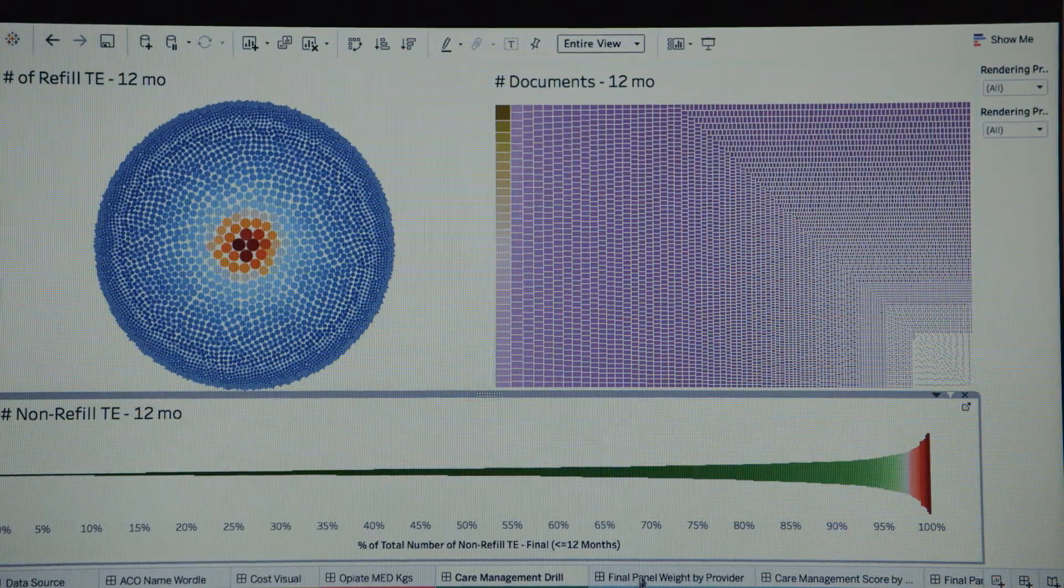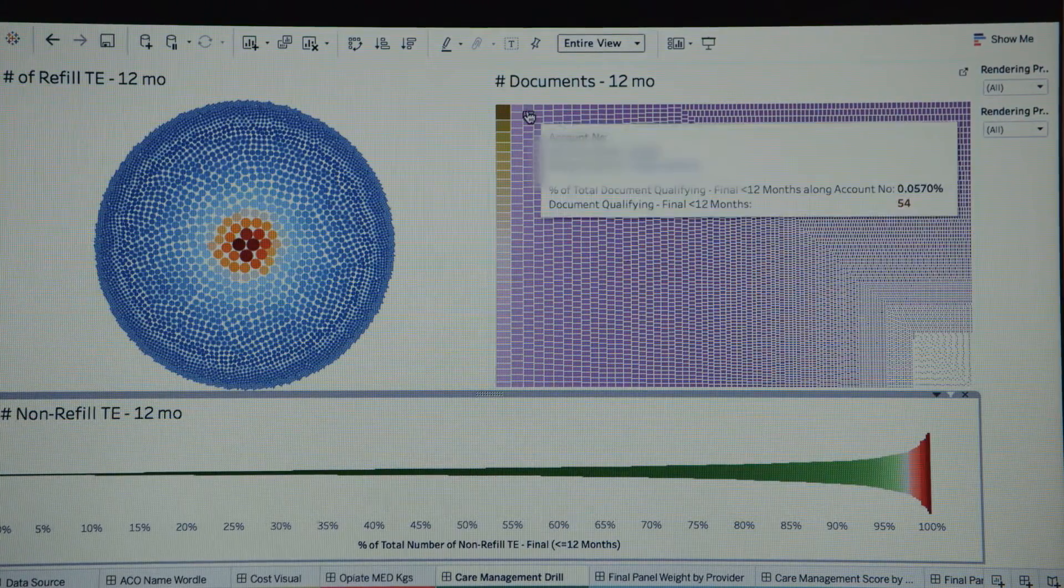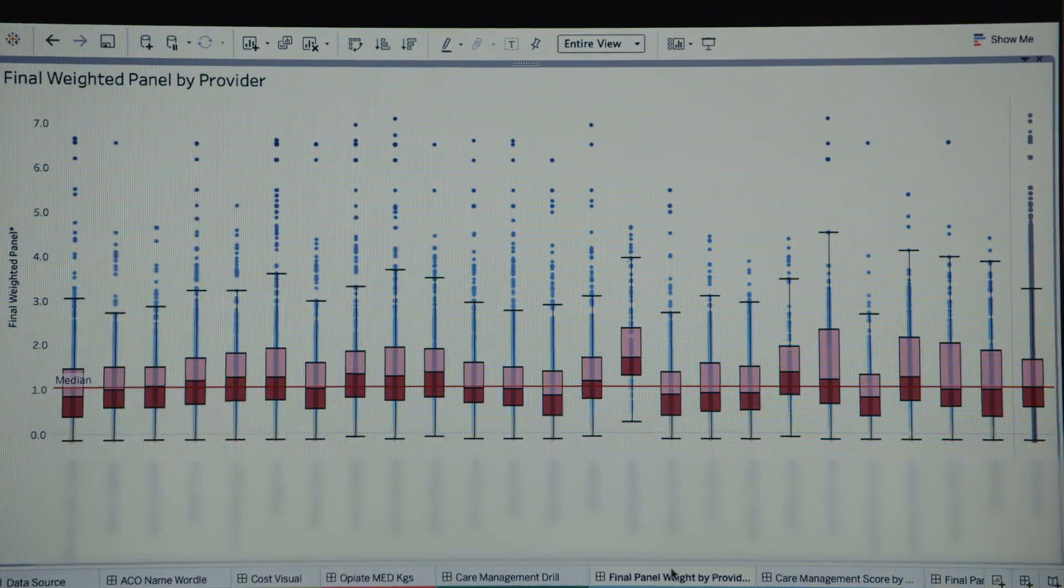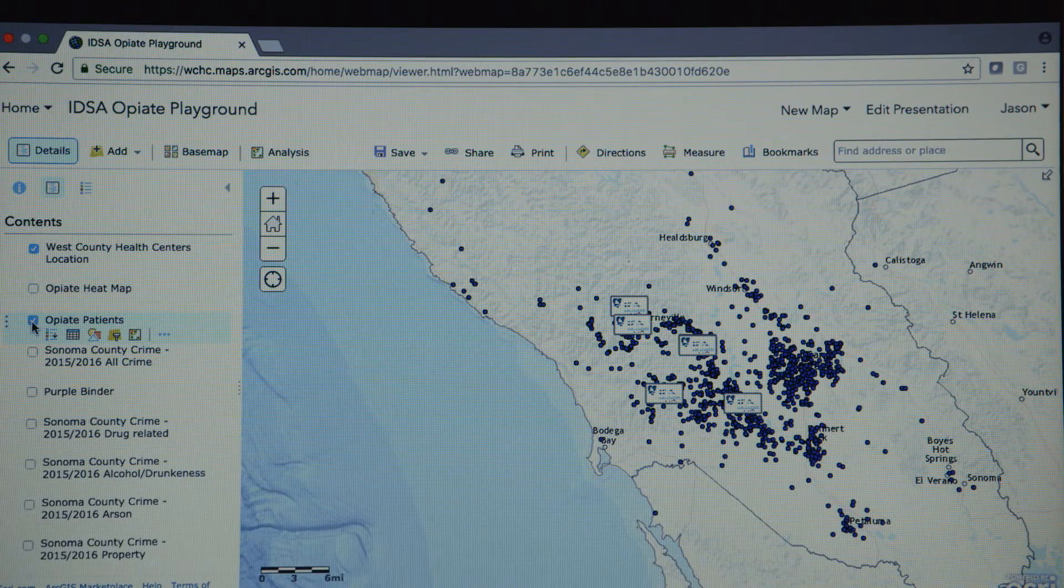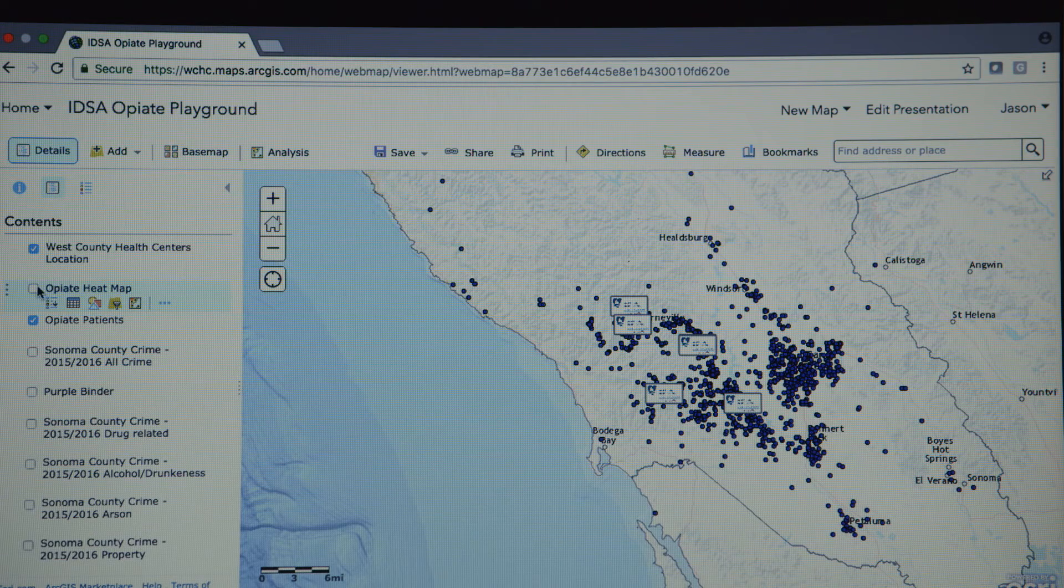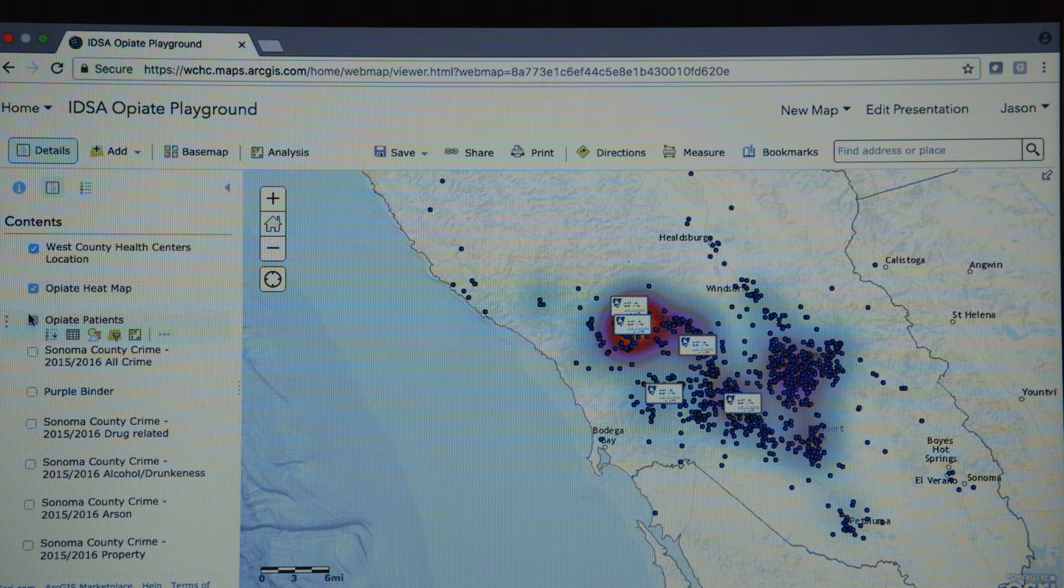We bring in data for understanding the context that people live in, and that includes data for neighborhoods, social attainment, education attainment, and so forth—dozens of data sets.